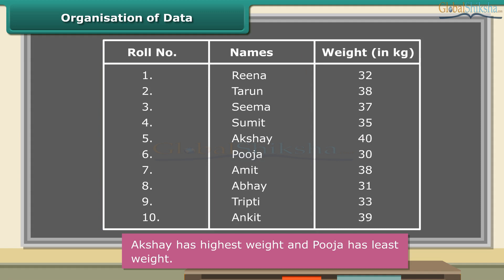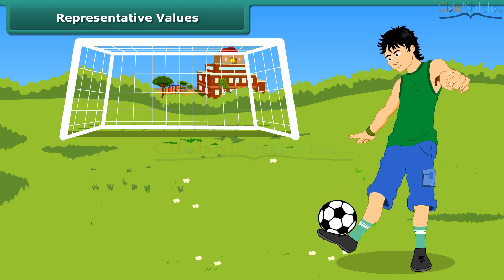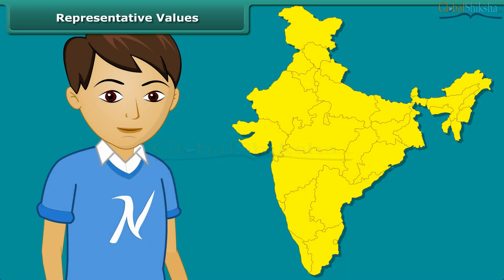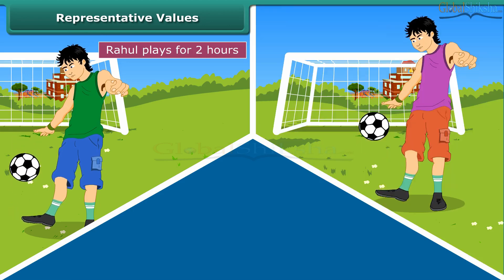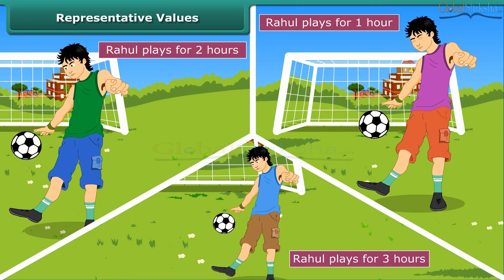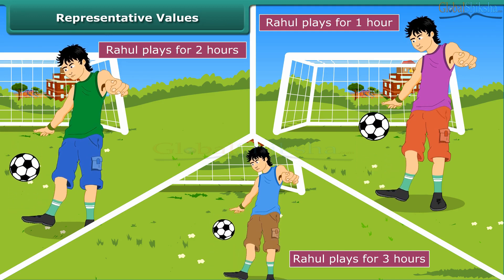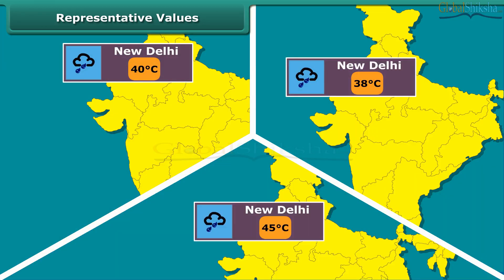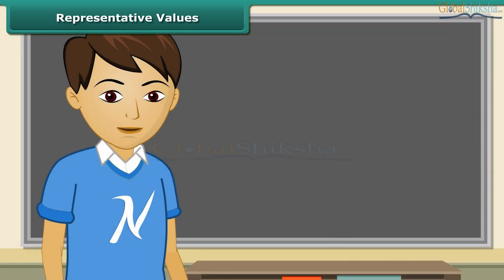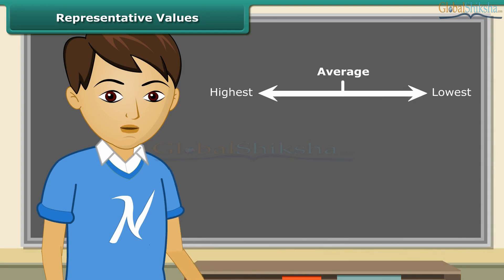We can put many kinds of data in tabular form. Rahul spends on an average of about 2 hours daily for his outdoor games. The average temperature of New Delhi at this time of the year is about 40 degrees Celsius. Have you noticed the word average? By average, we understand that Rahul usually plays for 2 hours — on some days he may play for less and on other days he may play longer. Similarly, the average temperature of 40 degrees Celsius means the temperature is around 40 degrees Celsius, sometimes less and sometimes more. Thus, average lies between the highest and the lowest value of the given data.